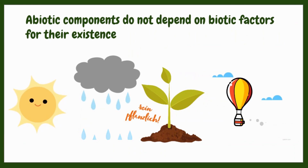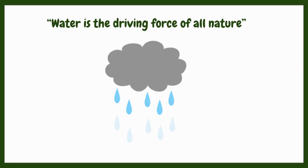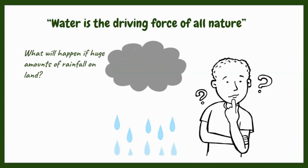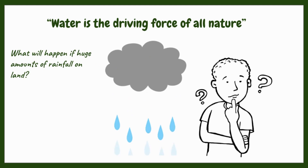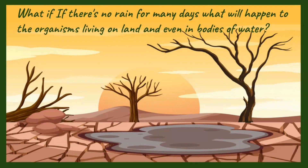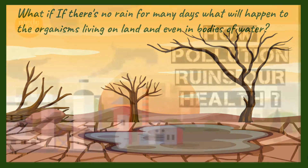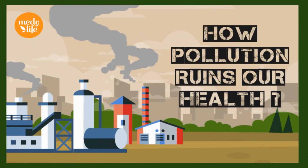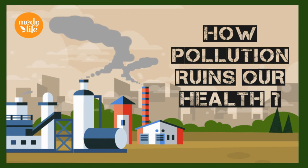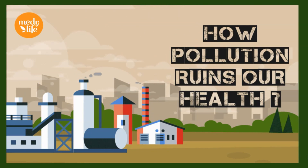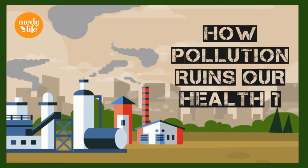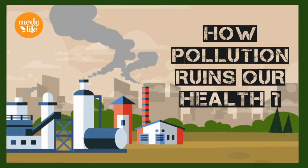Water is the driving force of all nature. Rain is liquid precipitation, or water falling from the sky. What do you think will happen if huge amounts of rain fall on land? How about if there's no rain for many days? What will happen to the organisms living on land and even in bodies of water? If one abiotic factor is changed or removed, it can affect the whole ecosystem. We will focus on the possible effects to the ecosystem due to changes in abiotic factors, and as humans are part of the ecosystem, we need to understand how these changes affect us and what we can do so all organisms won't suffer.